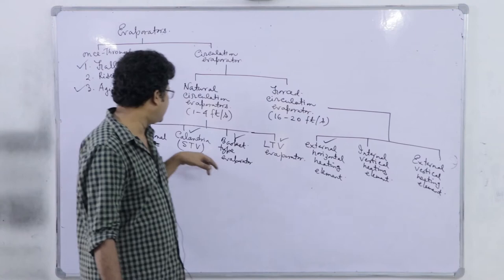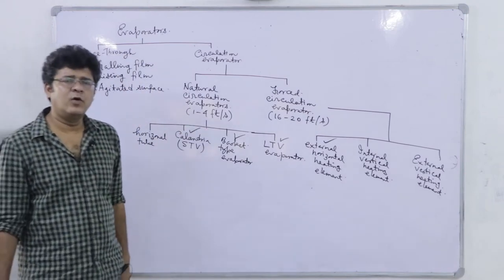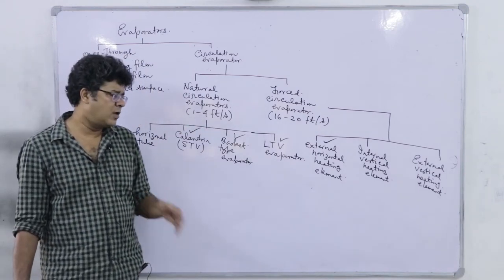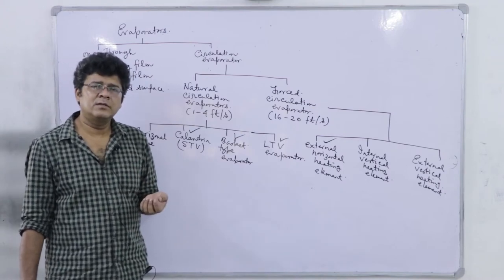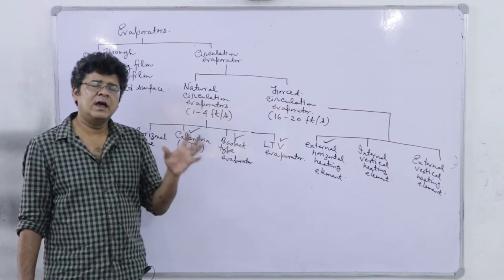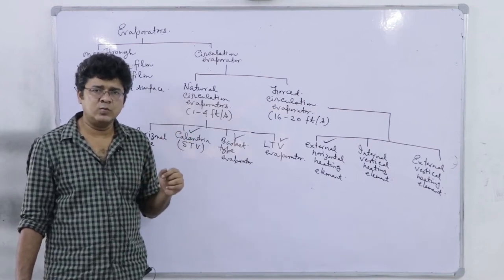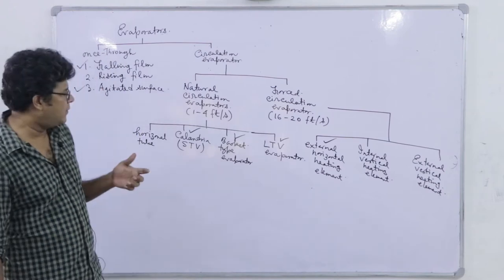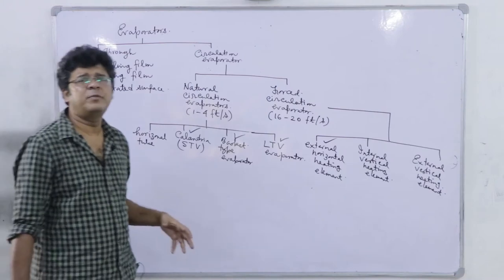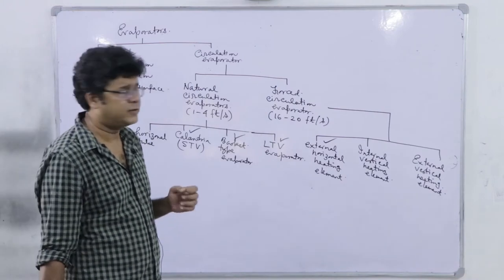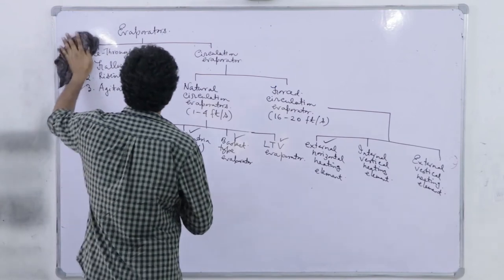In horizontal tube evaporators, steam flows through horizontal tubes. There will be inevitable condensation of steam, and liquid slugs may clog the entire tube. That is why this type of evaporator, which was a primitive design, is nowadays obsolete. We will next discuss the calendria short tube vertical evaporators.